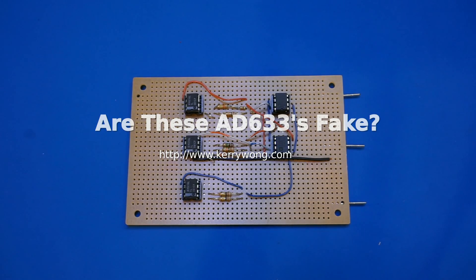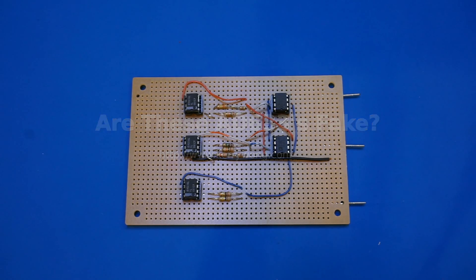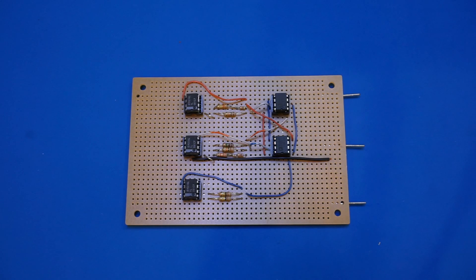In one of my previous videos on an HP 7044 XY plotter, I created the Lorentz attractor programmatically with the help of an Arduino. And based on viewers' feedback, I thought it would be really cool if I could do the same thing with a pure analog circuit.